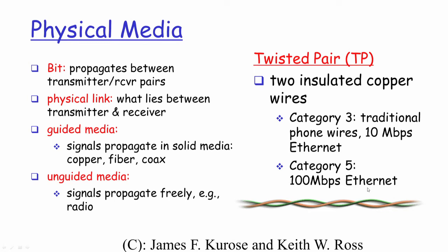In physical media, key terminology includes: the bit — the smallest unit of data in networking — which propagates from transmitter to receiver. The physical link is the media connecting transmitter and receiver. There are two categories: guided media, which is wired (copper, fibre, or coaxial cable), where signal transmitted at one end is guaranteed to arrive at the other end within distance limitations.